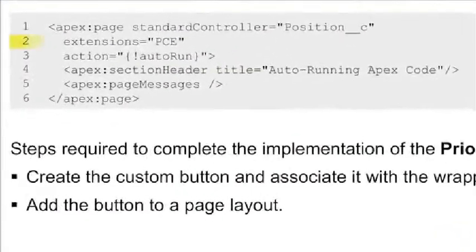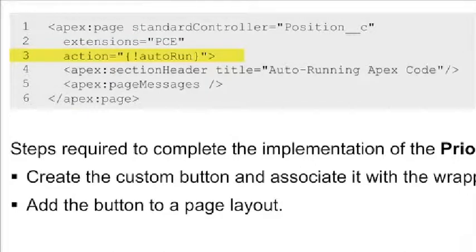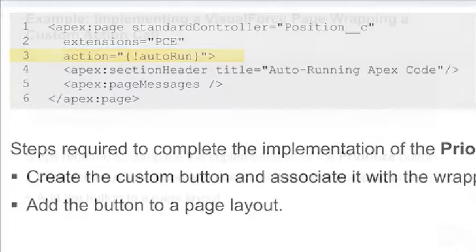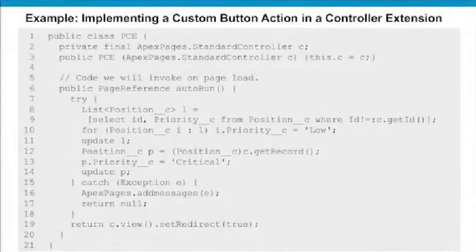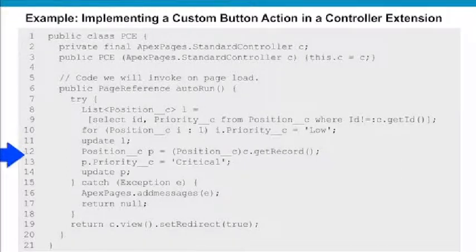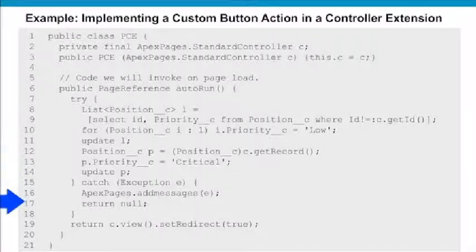Notice that we have the extensions attribute referencing our class called PCE, and there is an action attribute called autorun. So we need to create the autorun method inside the controller called PCE. Here it is — our action method called autorun. It does a database query, gets the record, resets our priority, performs an update, and ultimately redirects the user back to the original requesting page.